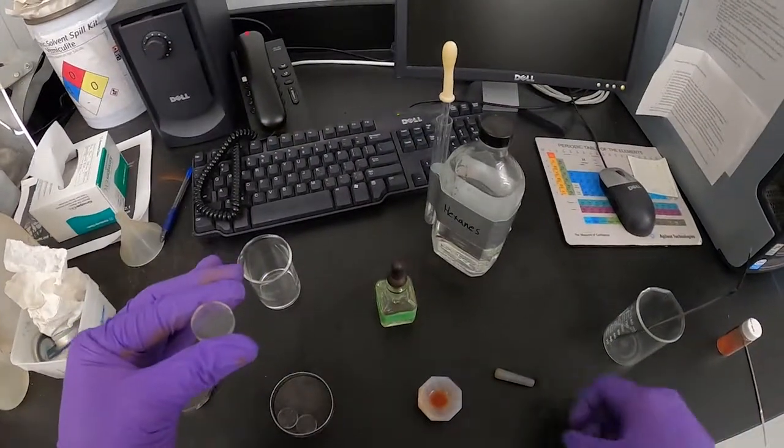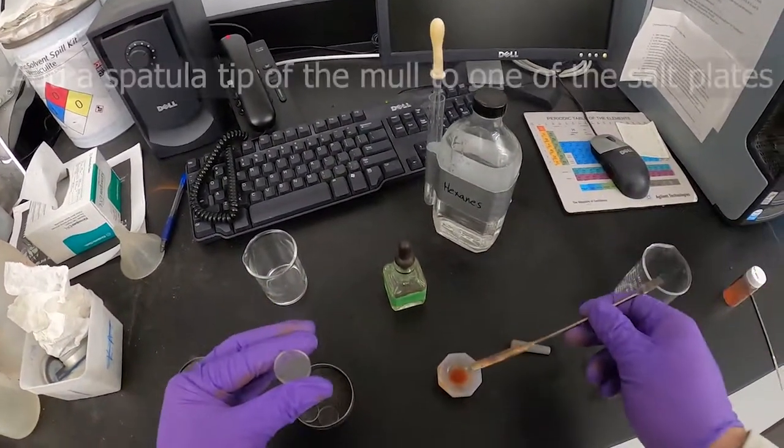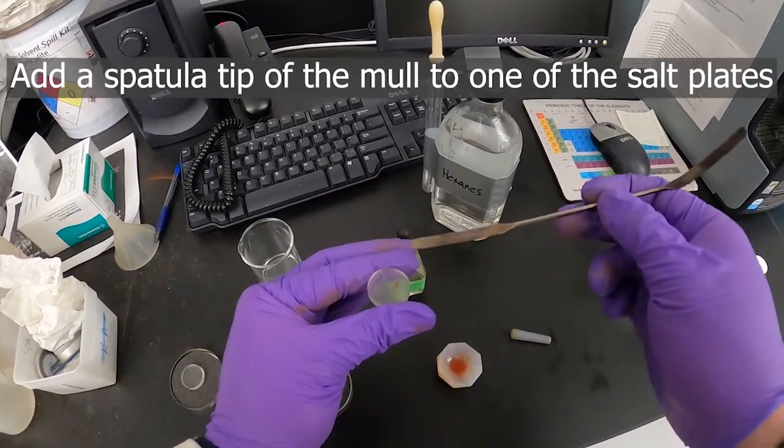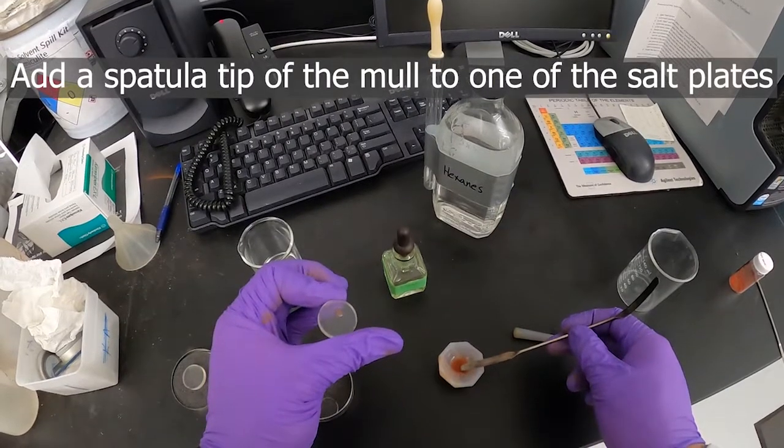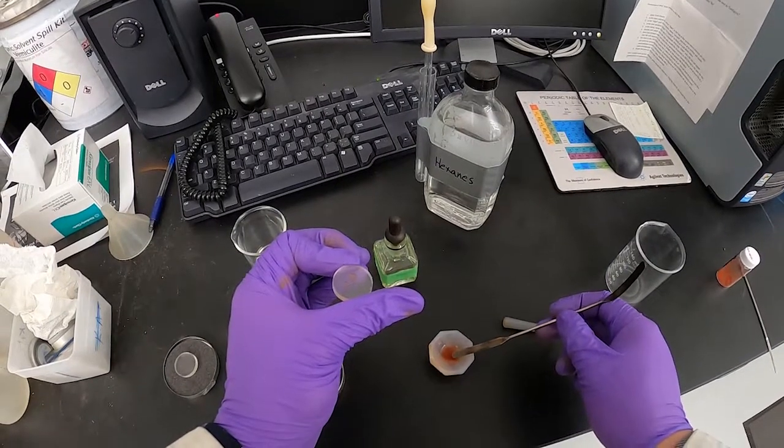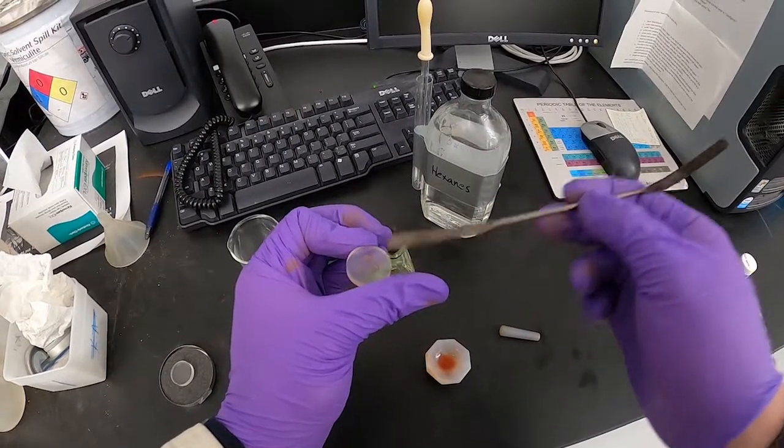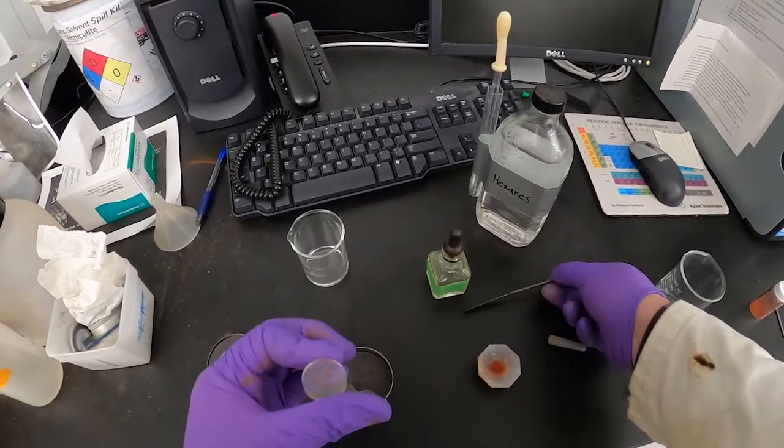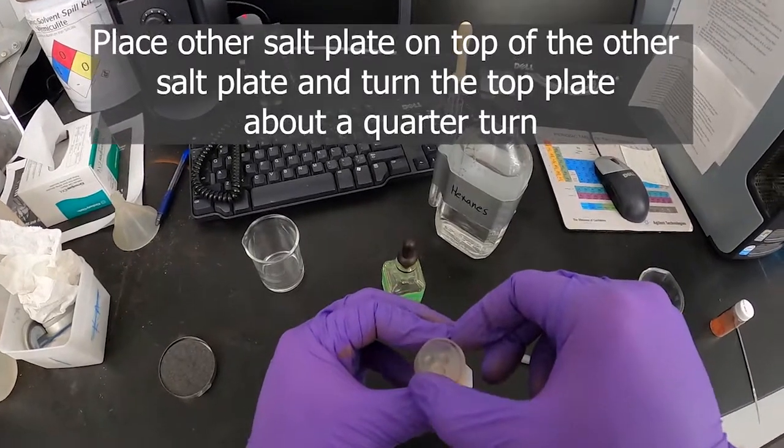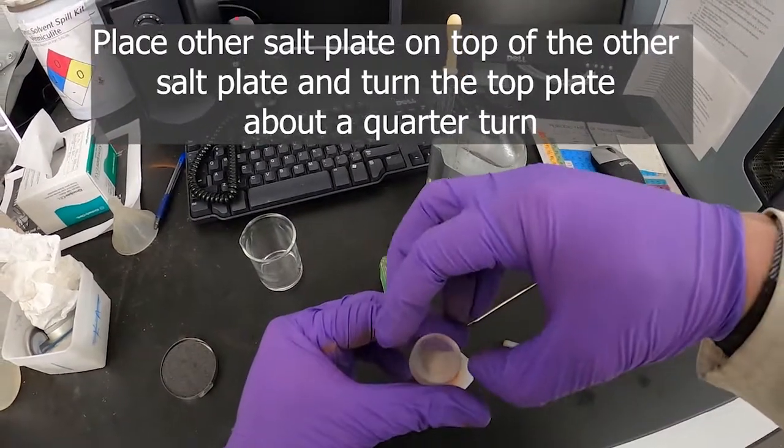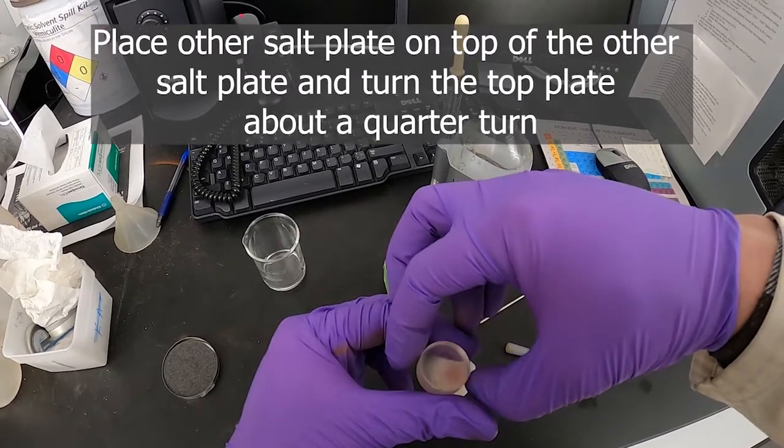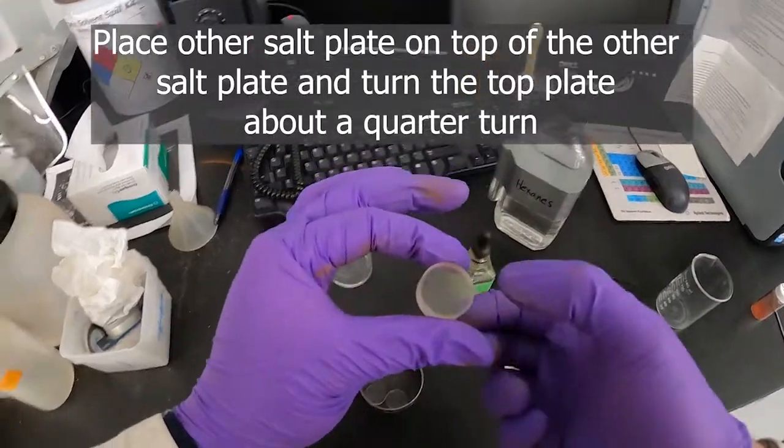All right, we'll take our spatula here, a little bit of our mull here, put three extra drops on there. Take our other plate, put some on there, and turn 90 degrees or so to get that mull spread out between the plates.